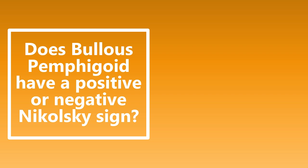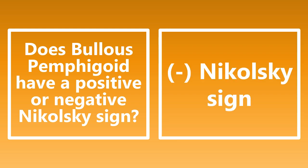Does bullous pemphigoid have a positive or a negative Nikolsky sign? Bullous pemphigoid has a negative Nikolsky sign. Bullous pemphigoid is the condition where autoantibodies are formed against the hemidesmosomes. It is characterized by firm, tense bullae on the skin, and it has a negative Nikolsky sign — these bullae do not rupture when they are rubbed.